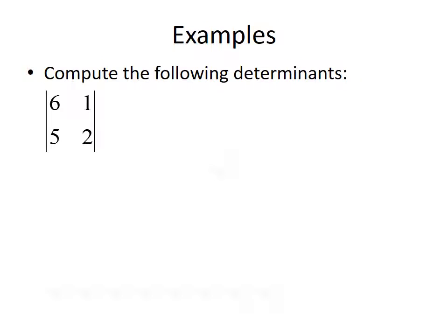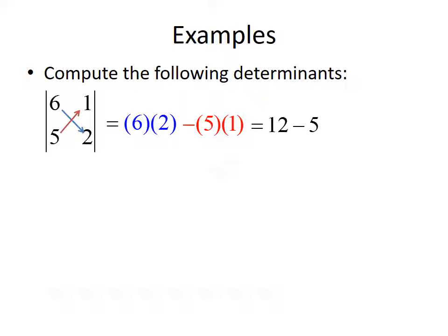Let's look at an example. We want to find the determinant of the matrix 6, 1, 5, 2. To find the determinant of a 2x2 matrix, we multiply the first diagonal, 6 times 2, and add that, then multiply the off-diagonal, 5 times 1, and subtract it. So 6 times 2 is 12, and 5 times 1 is 5, giving us 12 minus 5, which equals 7.